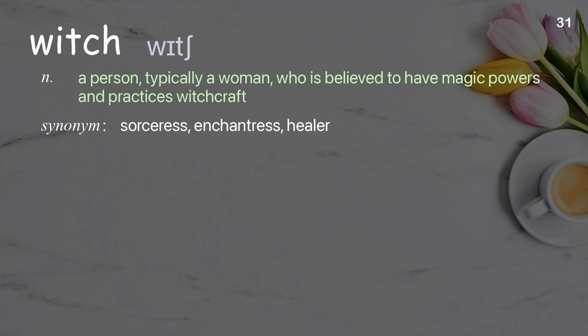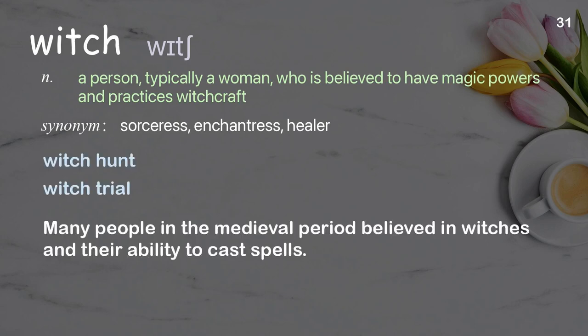Witch: A person, typically a woman, who is believed to have magic powers and practices witchcraft. Examples: witch hunt, witch trial. Many people in the medieval period believed in witches and their ability to cast spells.